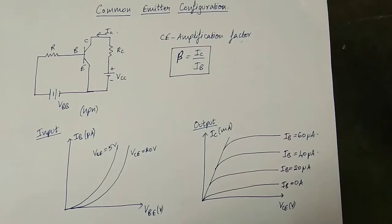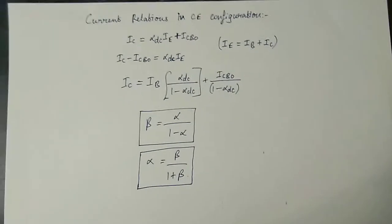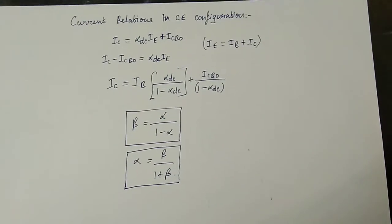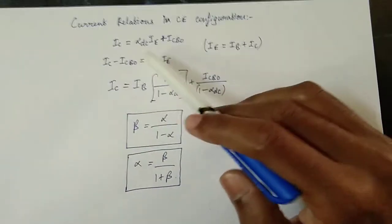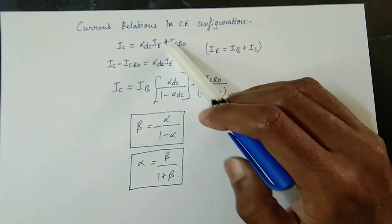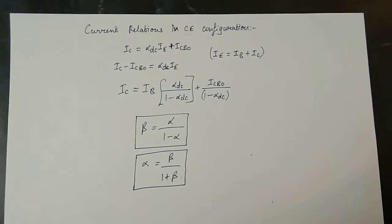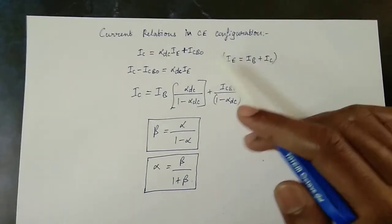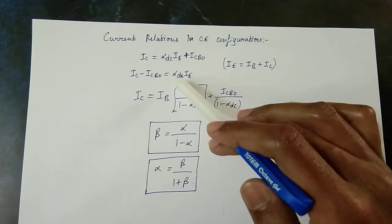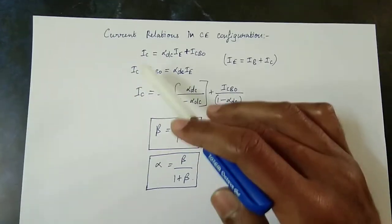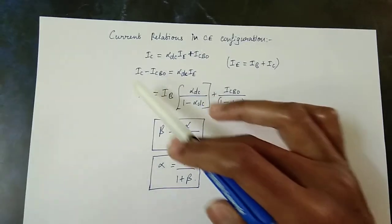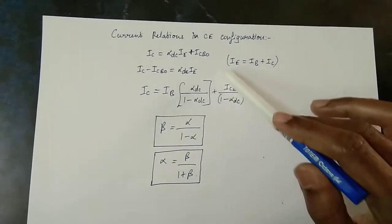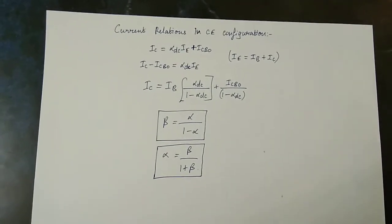This is the current relation for the common base configuration. The equation is: IC = alpha·IE + ICBO. Rearranging: IC/alpha − ICBO/alpha = IE, and IE = IB + IC.